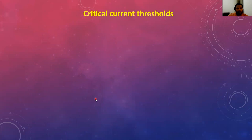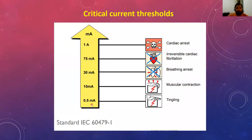Now we will see the critical current thresholds — at what current level it becomes dangerous. At 0.5 milliamperes you feel a slight shock. At 10 milliamperes your muscles contract. At 30 milliamperes you experience breathing arrest. At 75 milliamperes there is irreversible cardiac fibrillation. At 1 ampere cardiac arrest occurs. This is how current affects human beings, according to the IEC 60479-1 standard.